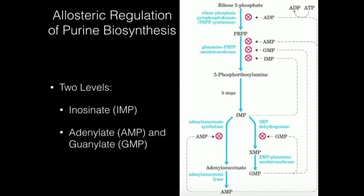Some of the most important levels of regulation are downstream: if I have high AMP, I don't need any more AMP, so I'm going to turn off adenylosuccinate synthetase. If I have high GMP, I don't need any more GMP, so inhibit IMP dehydrogenase. This is a nifty way of regulating purine synthesis.